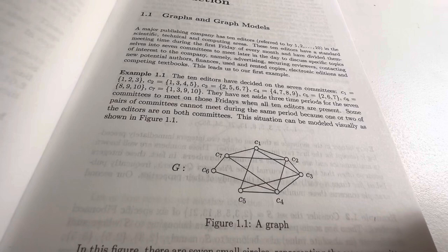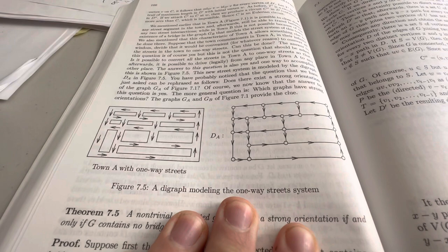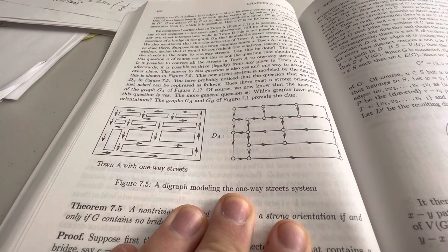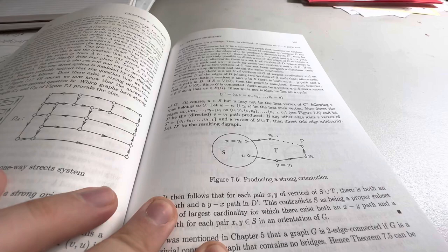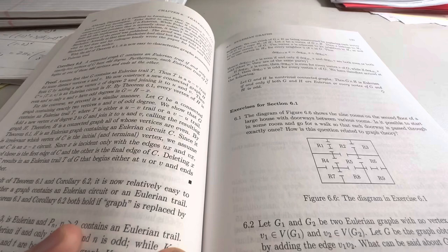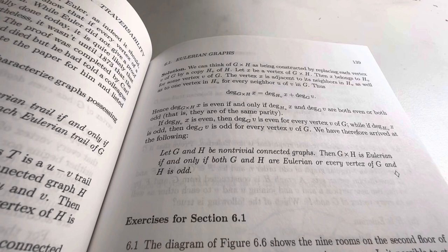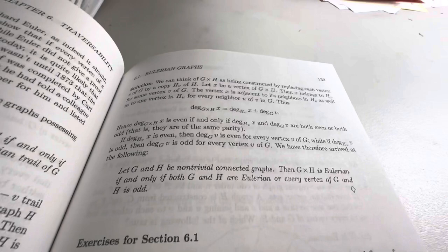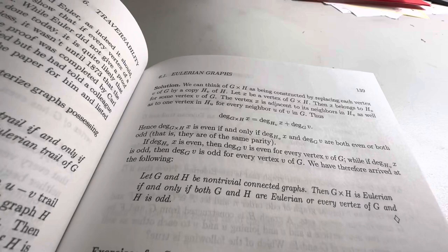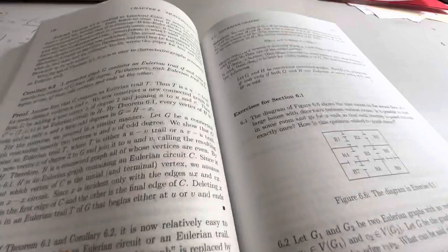Okay. I'm not going to—well, I mean, we can open up to a random page and see what's inside here. Something with some nice pictures. There's a digraph modeling the one-way street system. Let G and H be non-trivial connected graphs. Then G cross H is Eulerian, if and only if both H and G are Eulerian, or every vertex of G and H is odd. Yep, I'm definitely going to take notes over this book whenever I get the time. Timing is the issue.